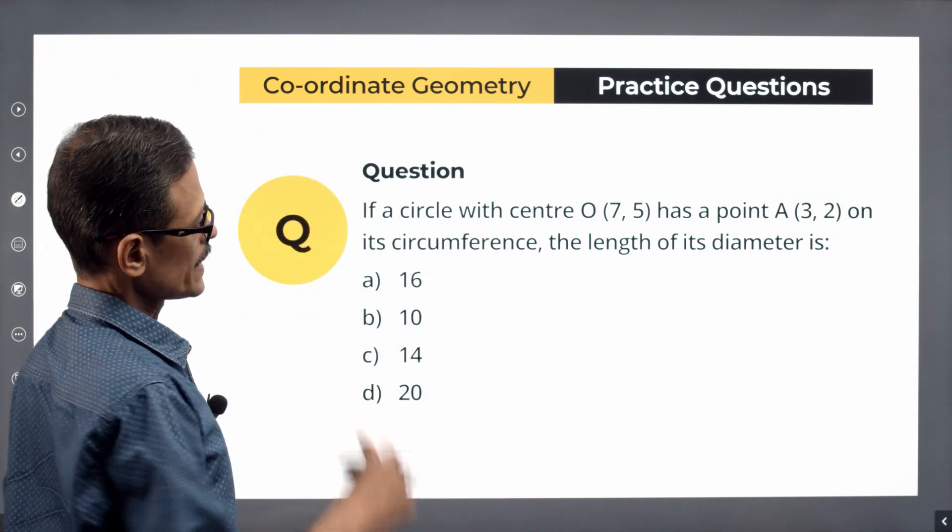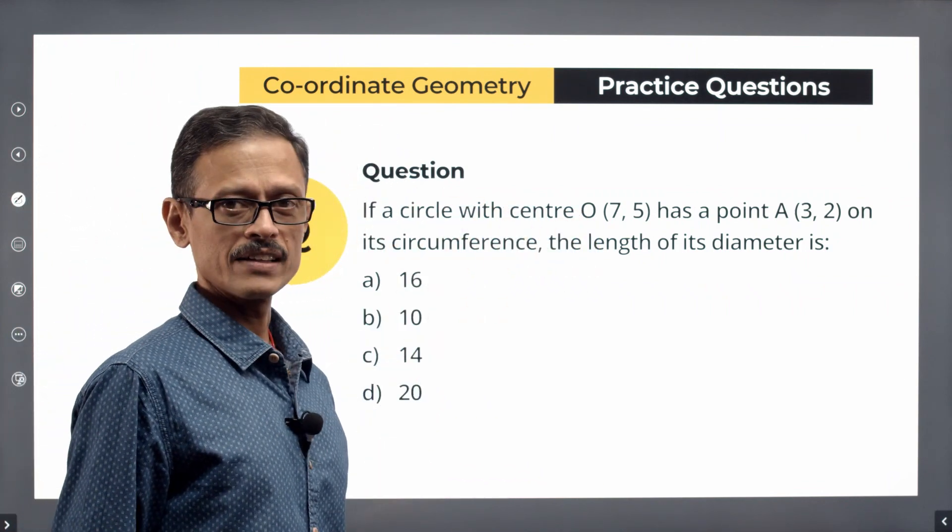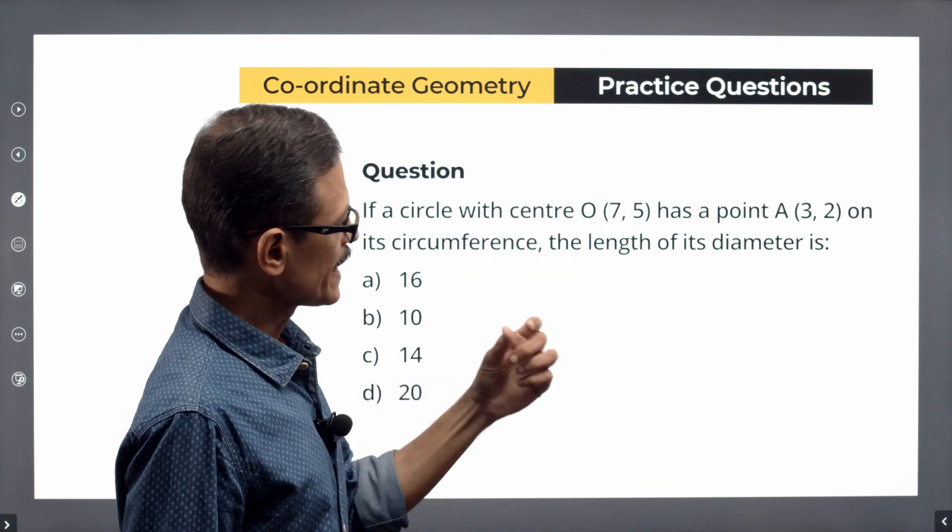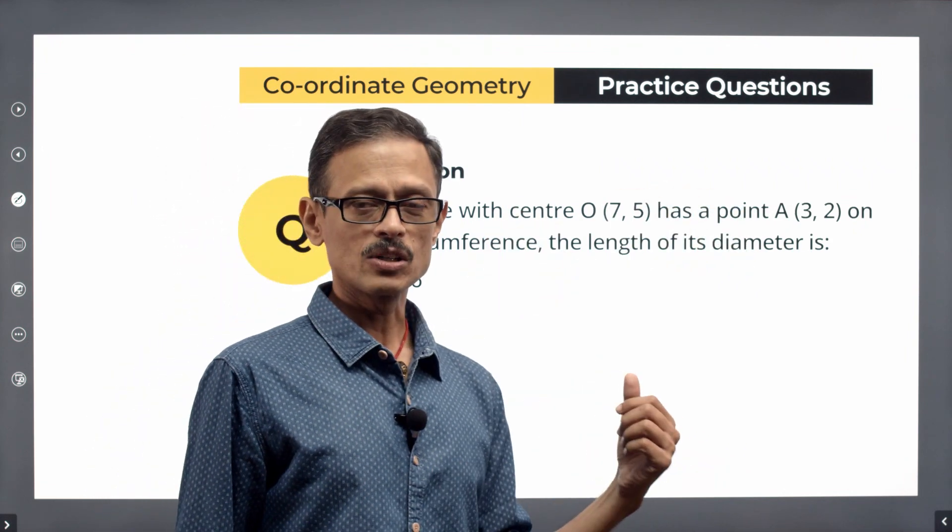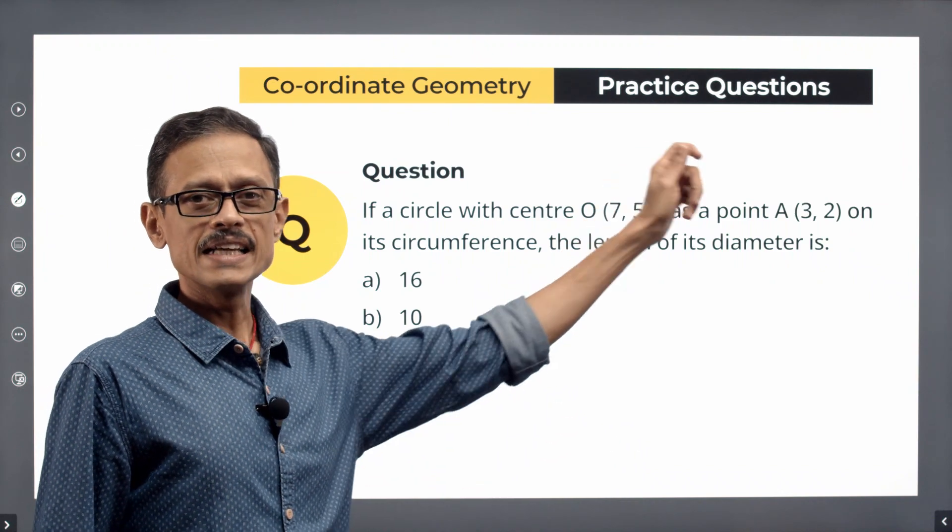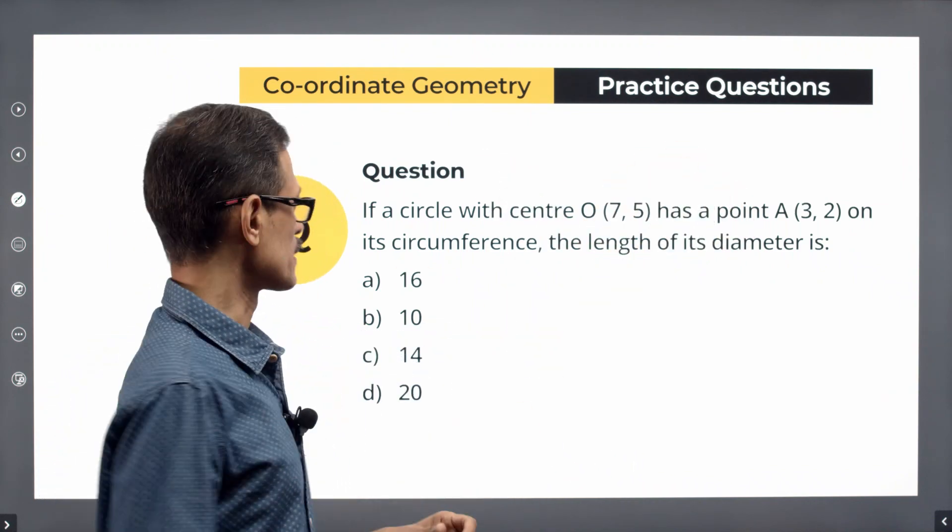The circle with center O whose coordinates are (7,5) has a point A with coordinates (3,2) on its circumference. O is the center of the circle. A is the point on the circumference of the circle.